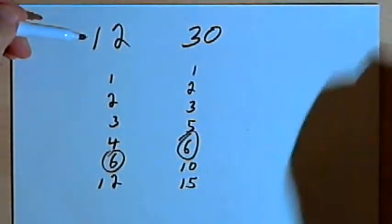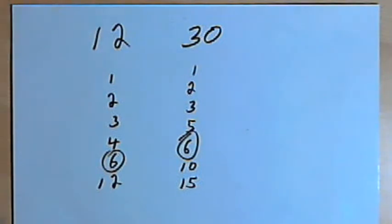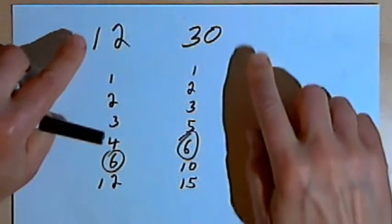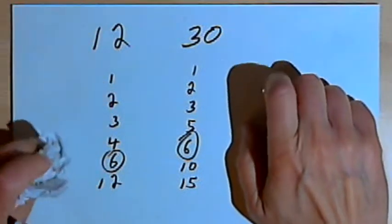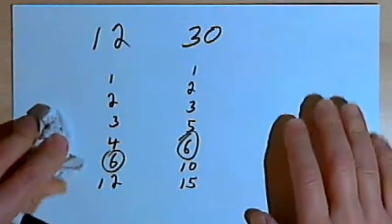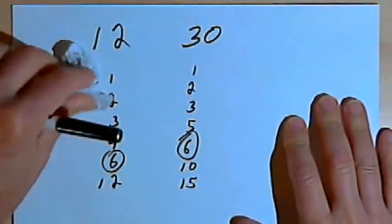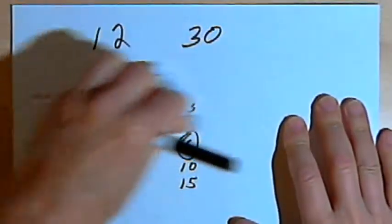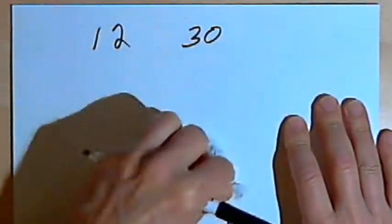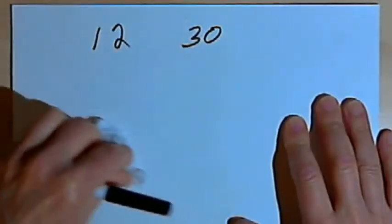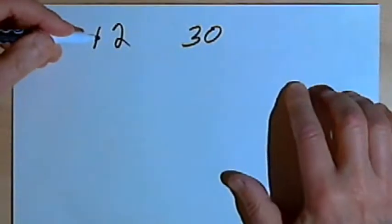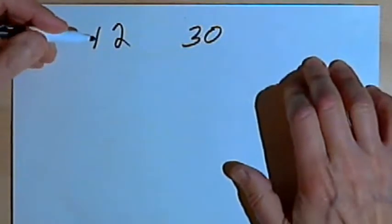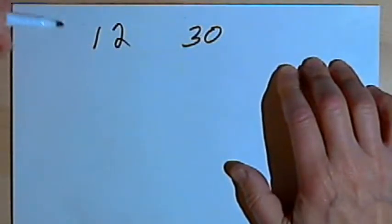Now this list method can work fine, but it can be a lot of work, and the bigger the numbers get, the longer the lists are. So let's do it a different way. I'm going to take those two numbers, 12 and 30, and make a factor tree for each one.